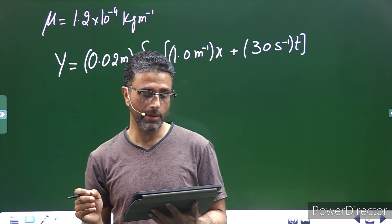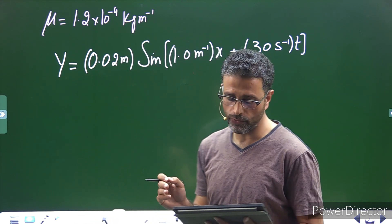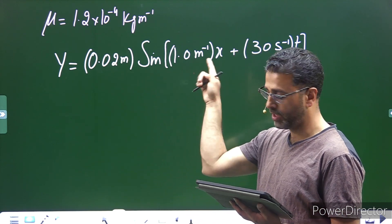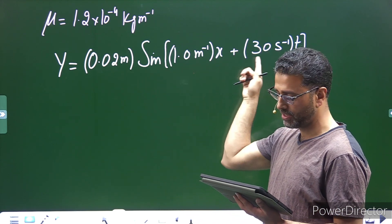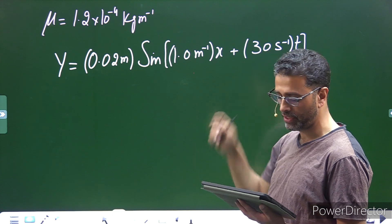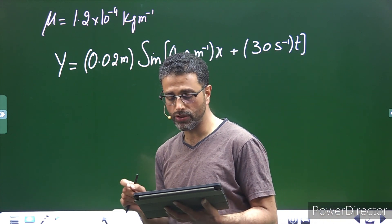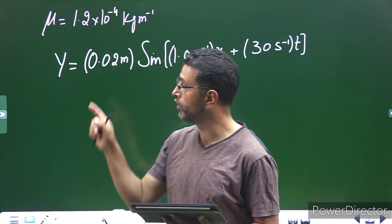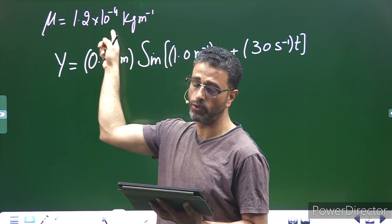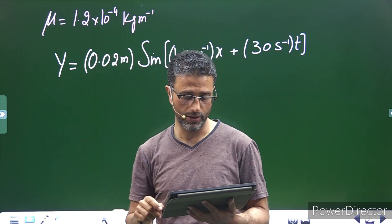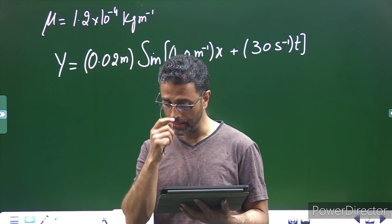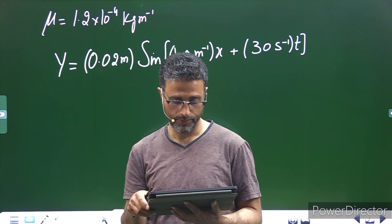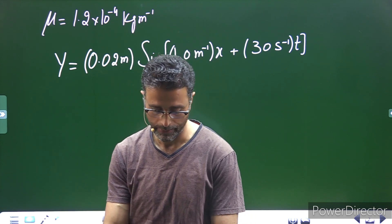A transverse wave described by y = 0.02 meter × sin(1.0 per meter × x + 30 per second × t) propagates on a stretched string having a linear mass density of 1.2 × 10⁻⁴ kg per meter. Units का ध्यान रखना है. Find the tension in the string.